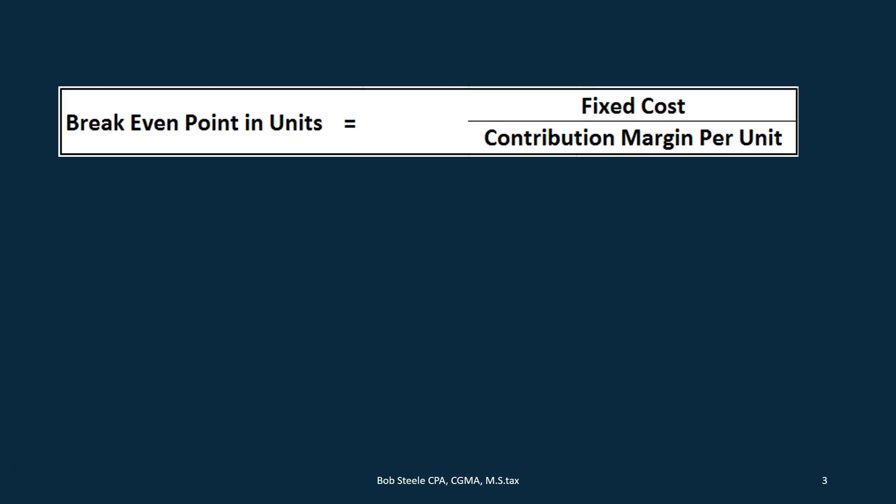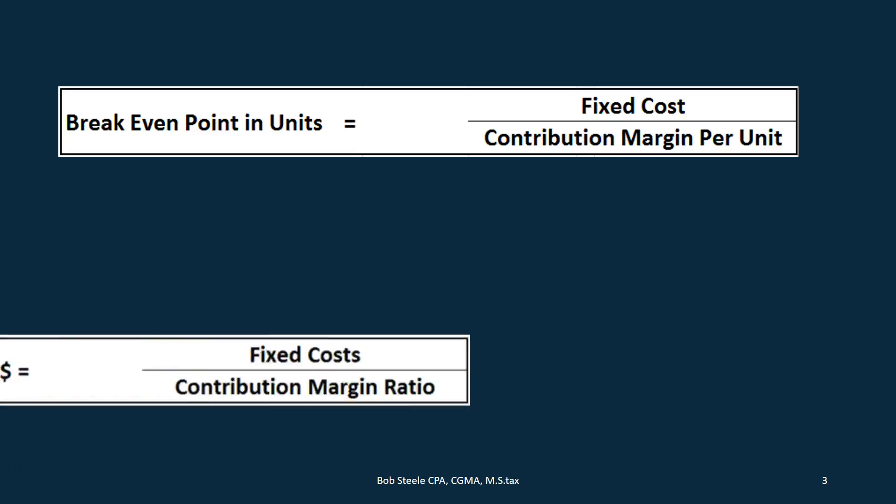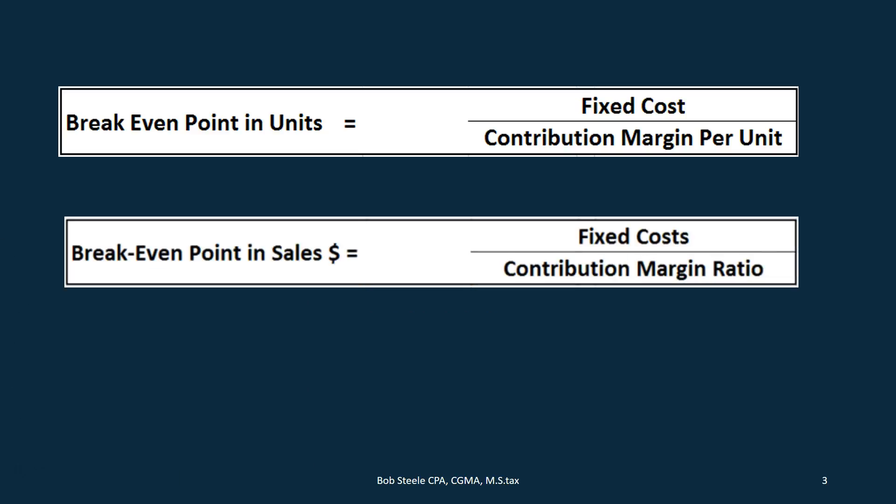We're going to have two formulas. One is the break-even point in units, which is fixed cost over the contribution margin per unit. And then we have the break-even point in sales dollars, which is fixed cost divided by the contribution margin ratio. There's also an alternative way to look at that one, which we'll cover as we go.